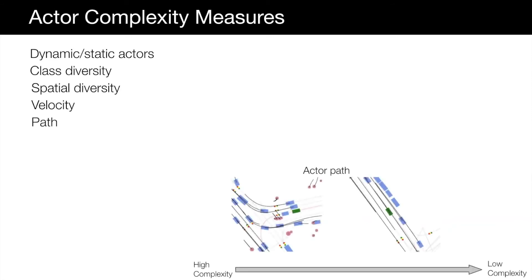More complexities with respect to actors include their spatial distribution, diversity in their velocity, and the curviness of their paths. Here are examples showing scenes with complex actor paths on the left and simpler paths on the right.